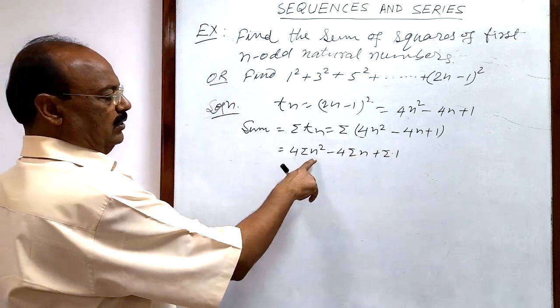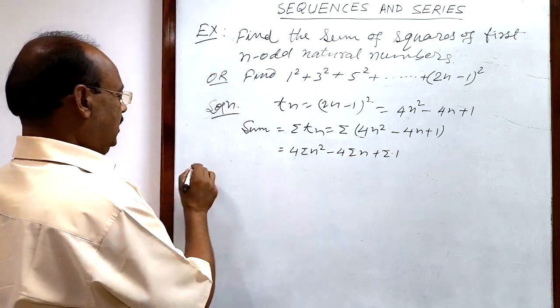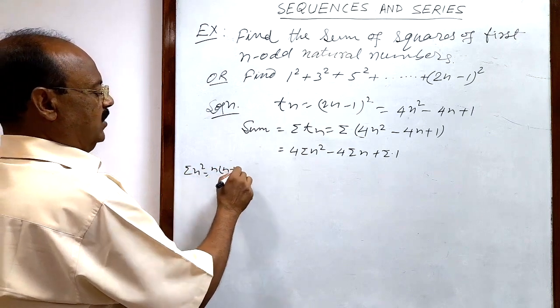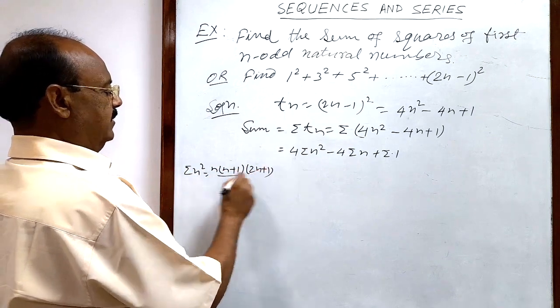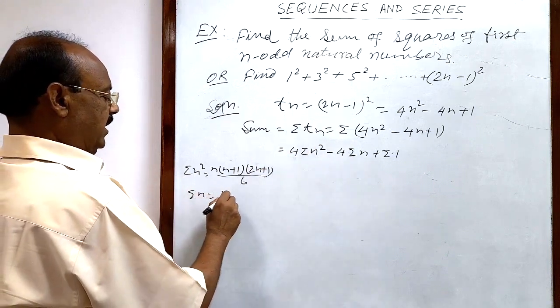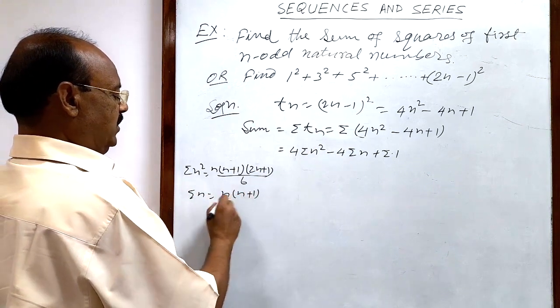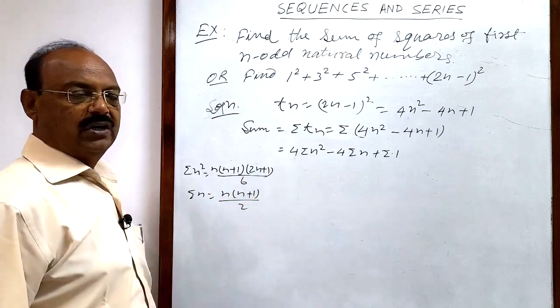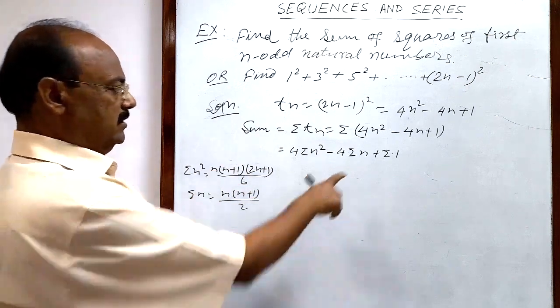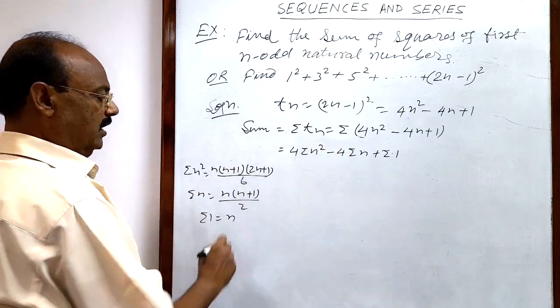Now, we will put value of sigma n² and you know sigma n² is n(n+1)(2n+1)/6. And sigma n is equal to n(n+1)/2. So you are supposed to remember these formulas. And sigma 1 is equal to n.